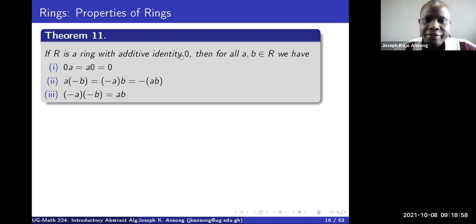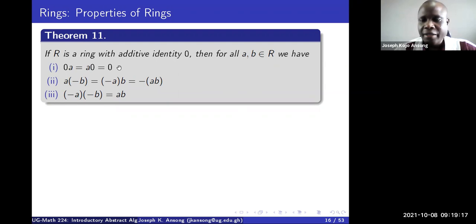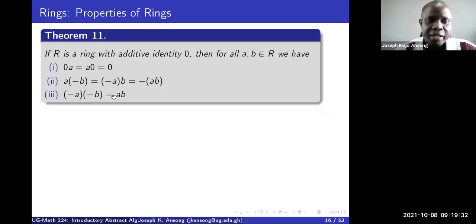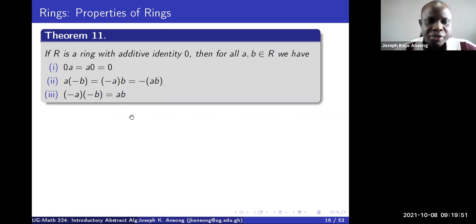If R is a ring with additive identity zero, then for all A and B in R, we have these properties. Zero times A equals A times zero equals zero. You may have seen this before many times, but now we want to prove it using rings. We also have A times negative B equals negative A times B, the same as negative (A times B). Basically this means we can factorize the negative out onto A, or pull it out from both, then find the product and negate it — two negatives give a positive.